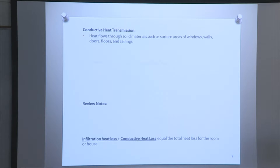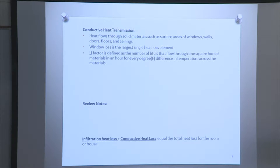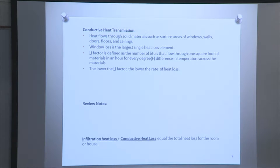Conductive heat transmission: heat flows through solid materials such as surface areas — windows, walls, doors, floors, or ceilings. Window loss is the largest single heat loss element. U-factor is defined as the number of BTUs that flows through one square foot of material in an hour for every degree Fahrenheit difference in temperature across the material. The lower the U-factor, the lower the rate of heat loss. Each penetration has its own U-factor.